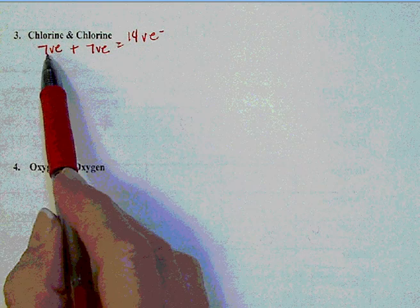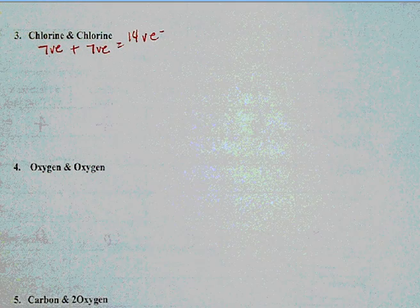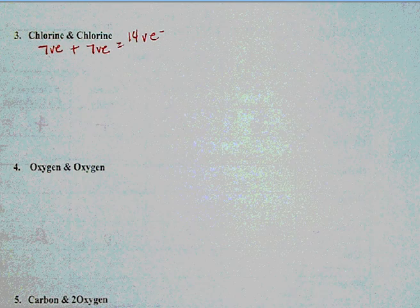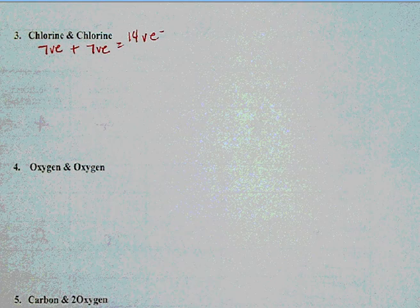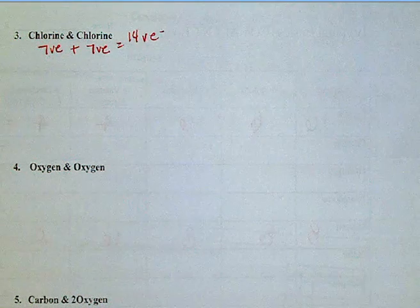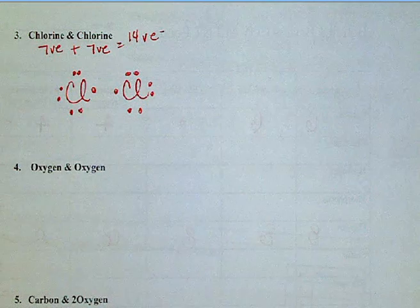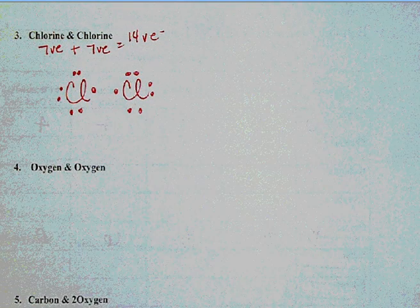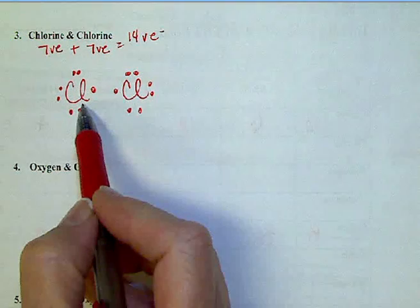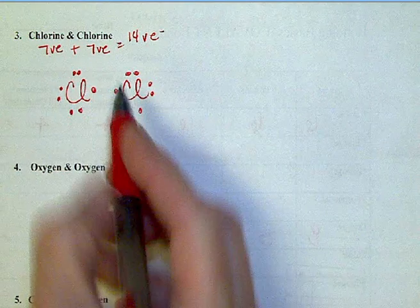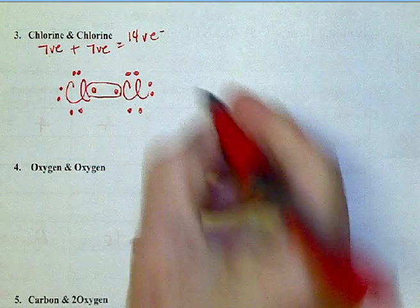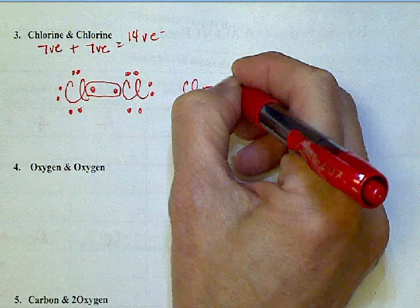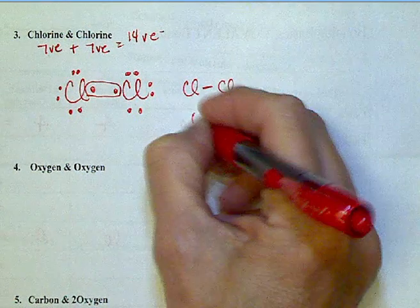Chlorine has seven valence electrons. We have two chlorines, so that gives us a total of 14 valence electrons. Drawing two chlorine atoms with those seven valence electrons each, we can see that each chlorine needs one more electron to reach eight, so they share one electron pair between them. The symbols with the bond show a single bond, and we write the formula as Cl₂.